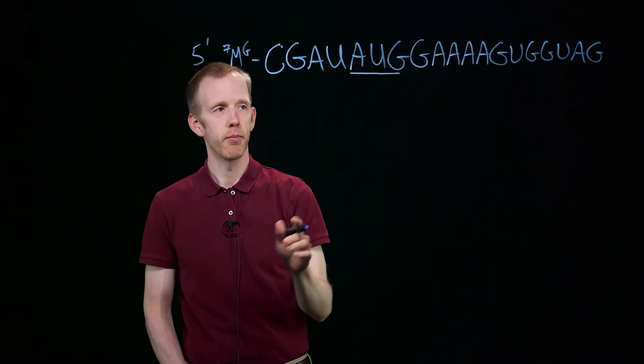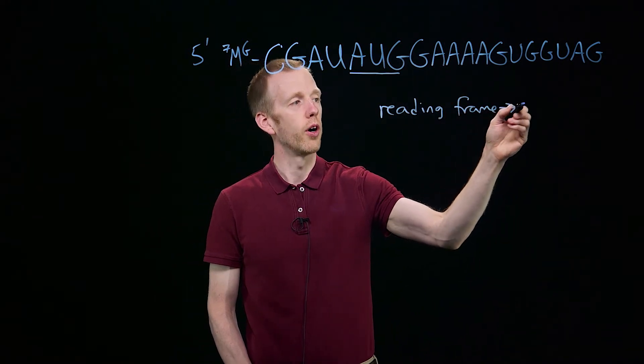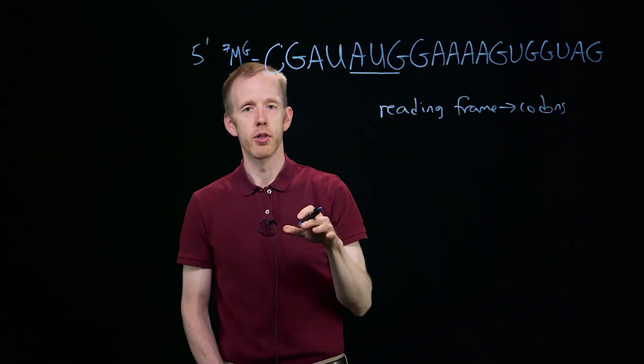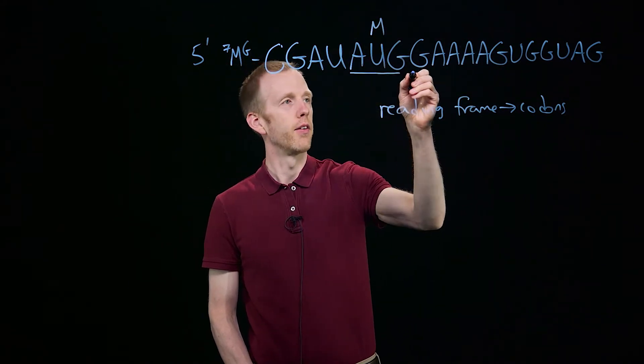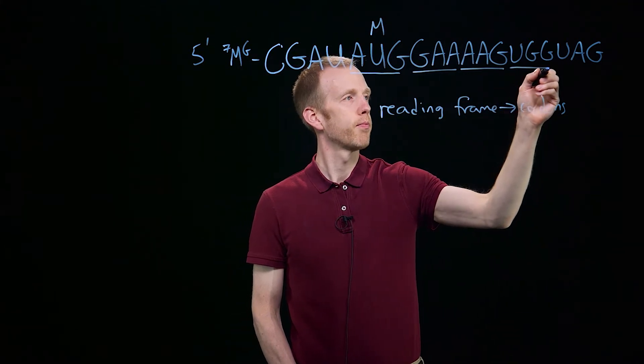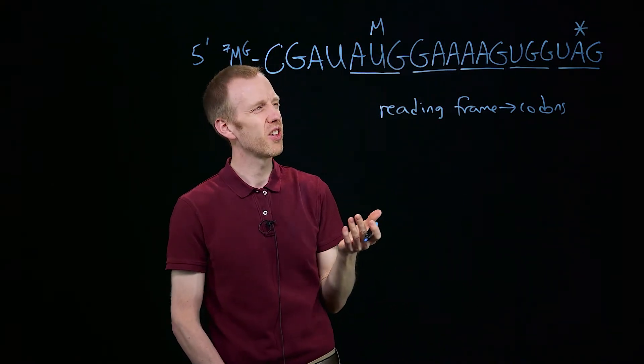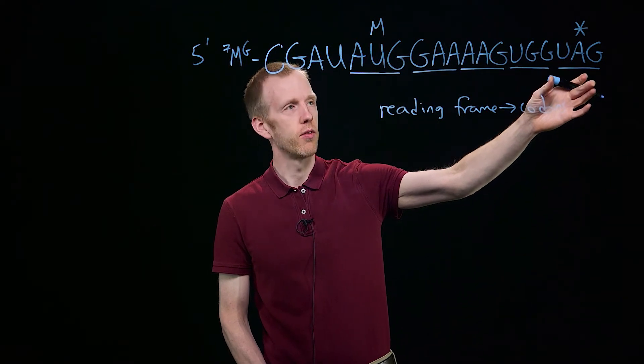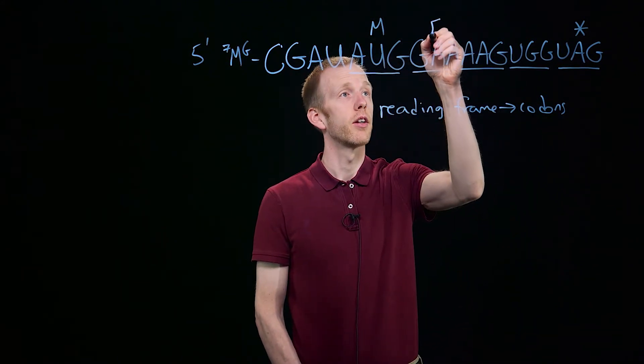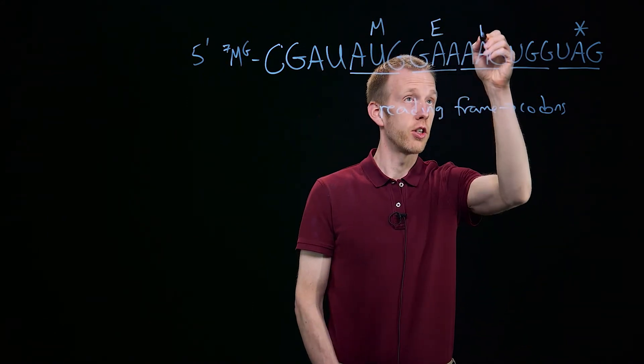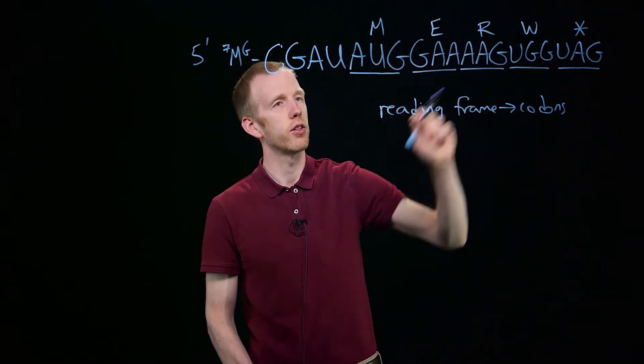That establishes the reading frame, which tells us which sets of 3 nucleotides, which codons, are going to be read by the ribosome. That starts with the first start codon, which is always AUG, and it codes methionine. Then the next sets of 3 until we encounter a stop codon, often abbreviated as an asterisk. That's where the ribosome will stop translation. So GAA is glutamic acid, AGG is arginine, and UGG is tryptophan W. That's the sequence of the protein encoded by this short gene.